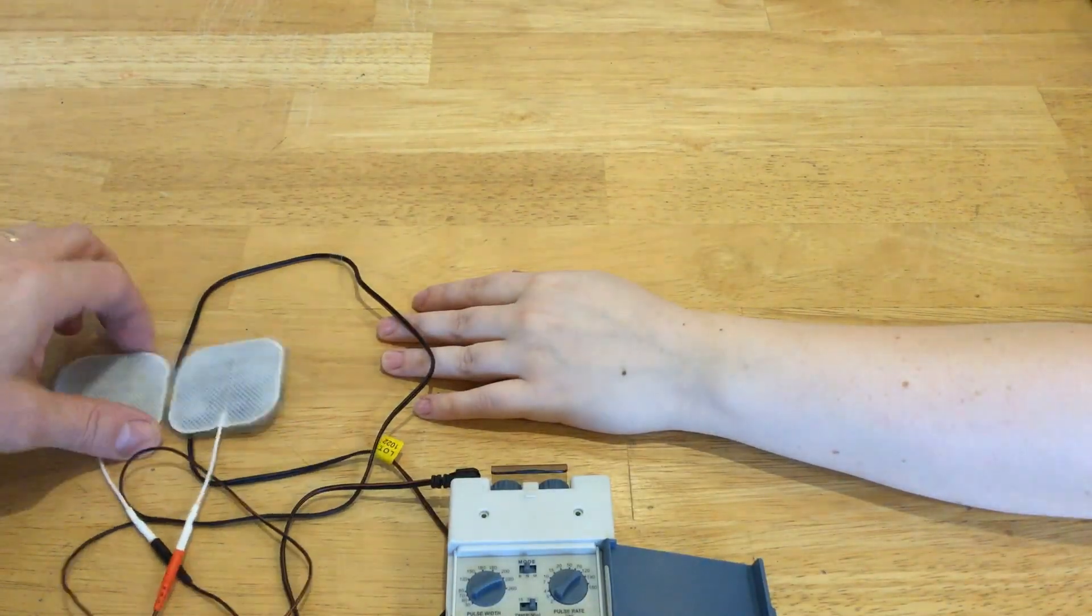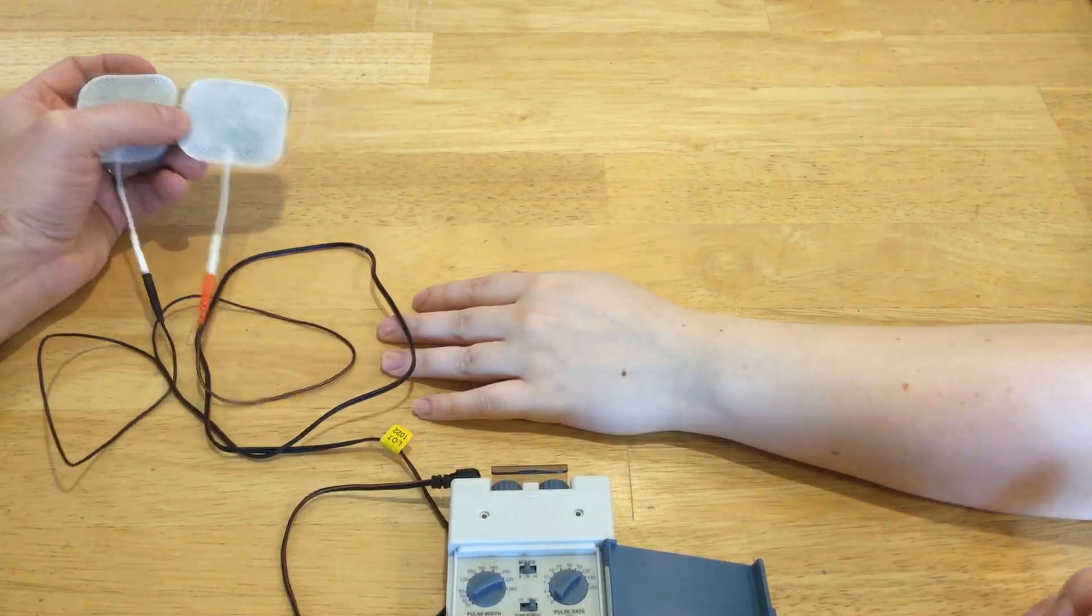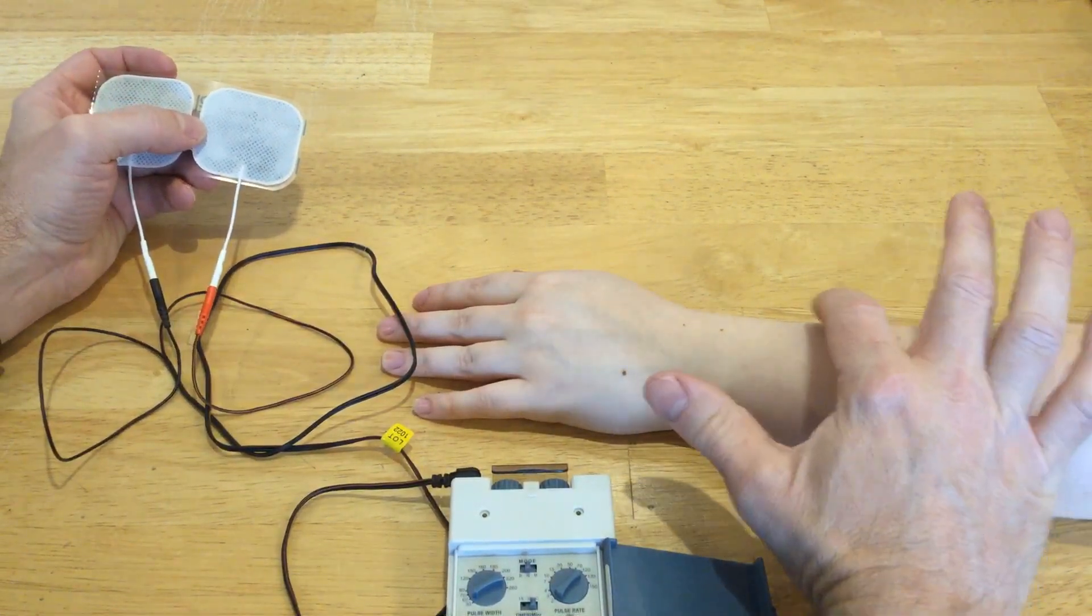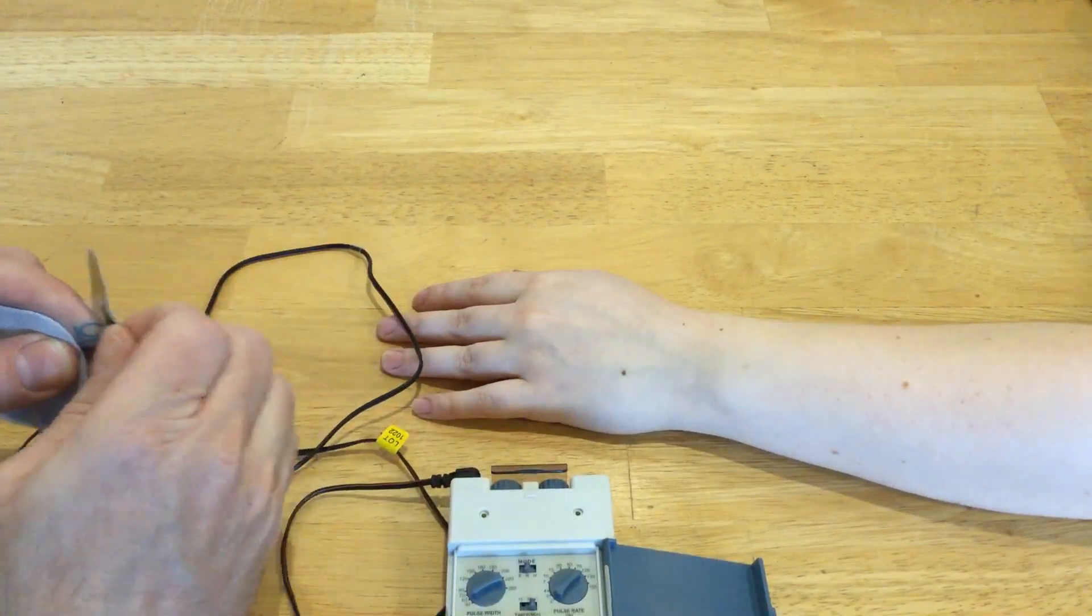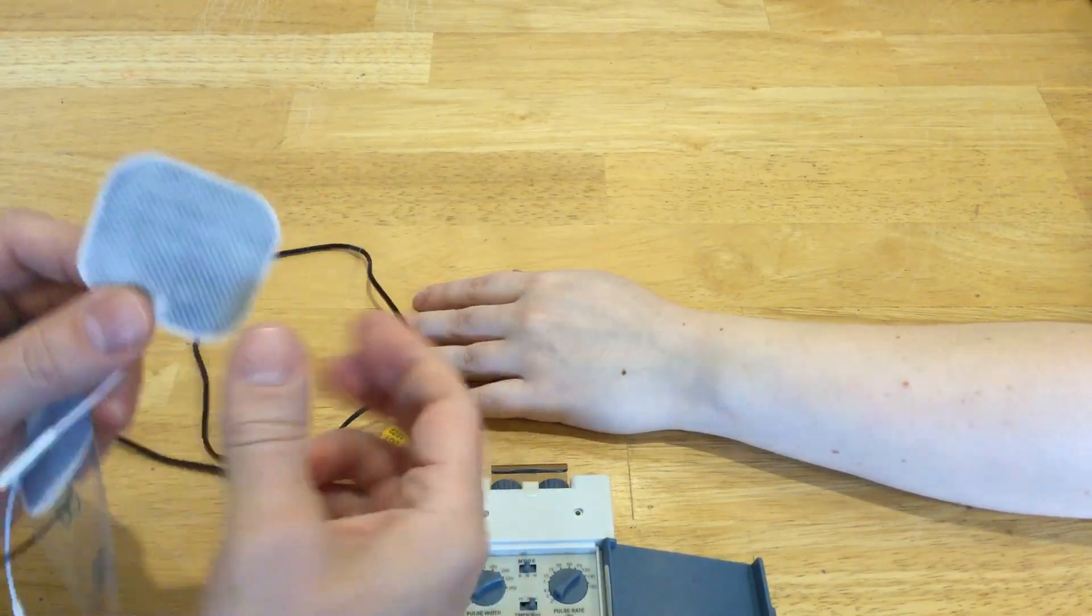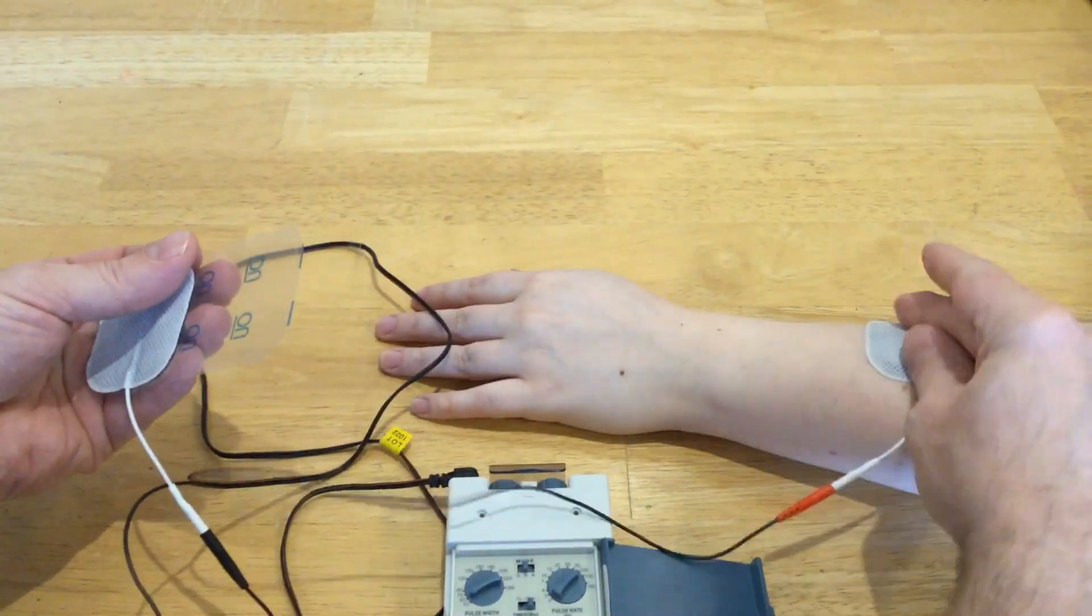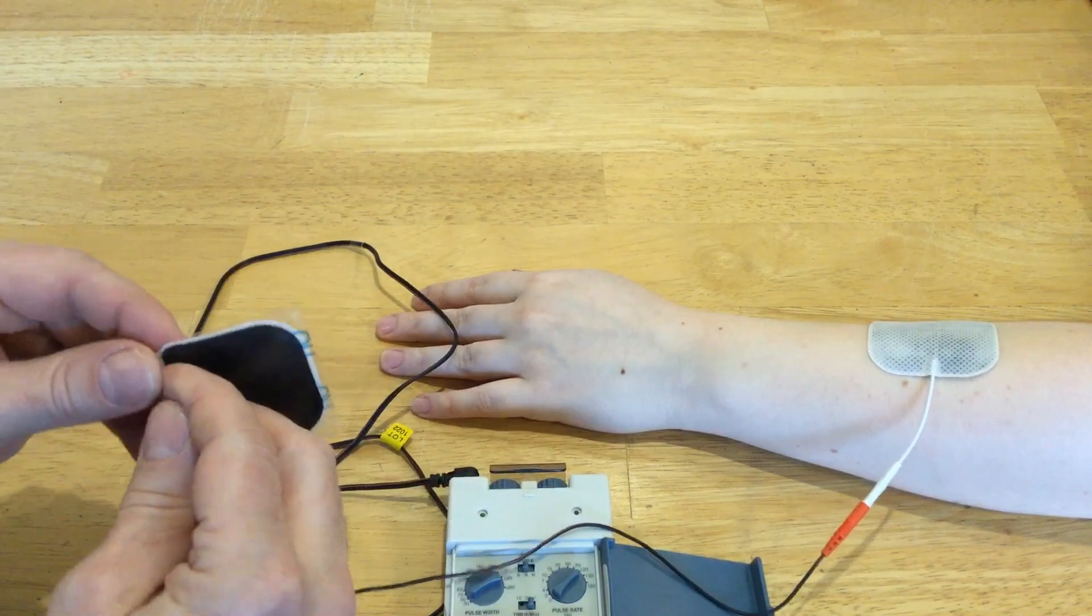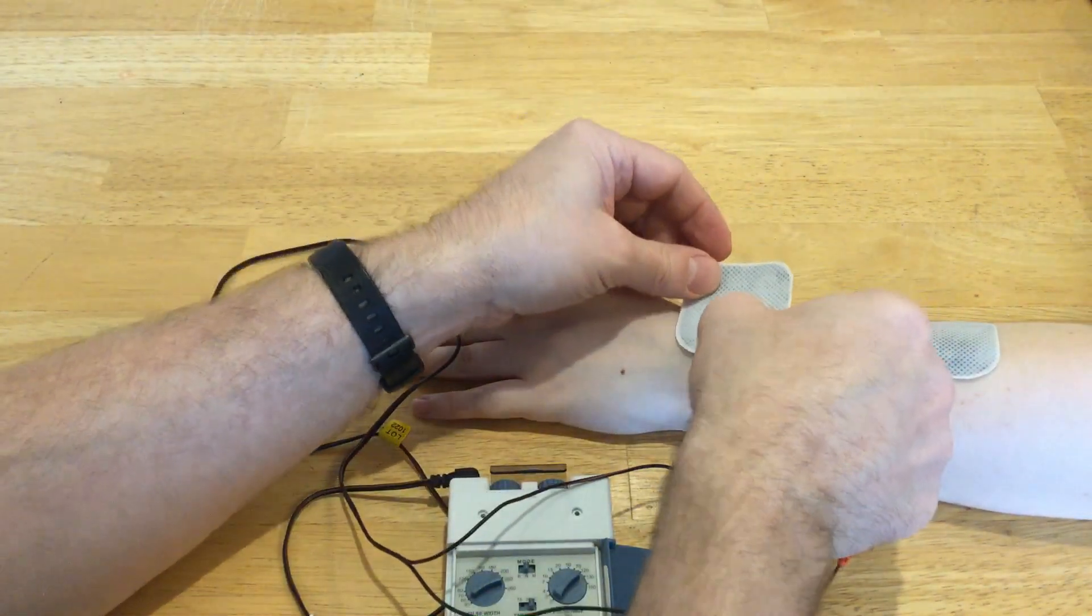Once we've done that, I'm going to pretend that my client has intersection syndrome, which would be pain right in this area here. Basically, you want to surround the area of pain with your electrodes with conventional TENS. So I'm going to apply an electrode proximal and an electrode distal.